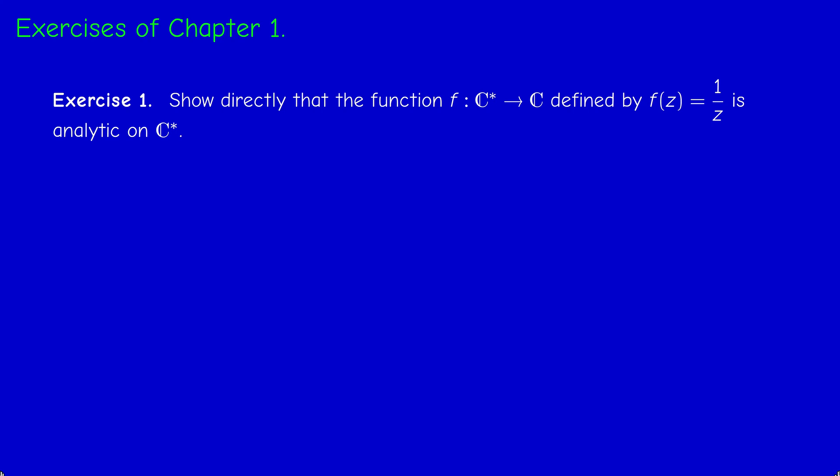So the first exercise, you have to prove by going back to the definition that the function 1 over z is analytic on C star, so it's analytic at every point different from zero.